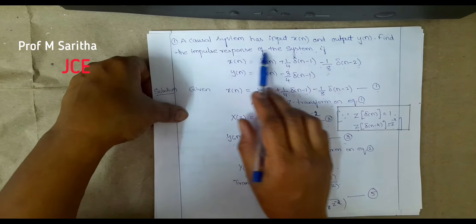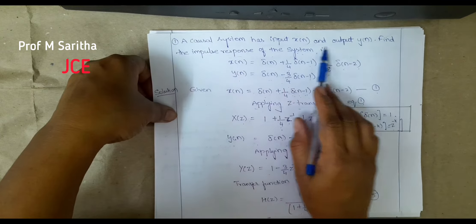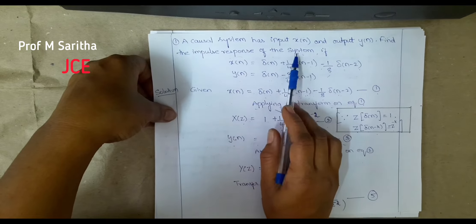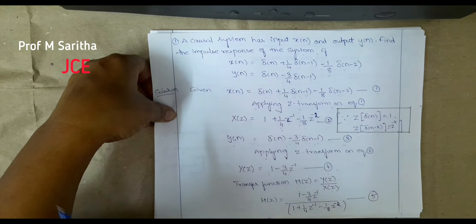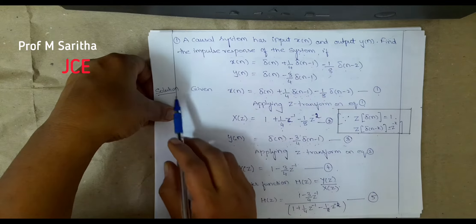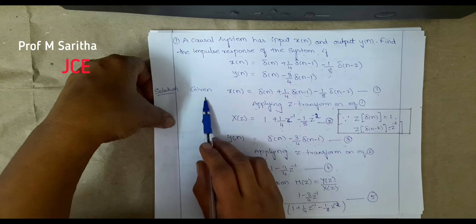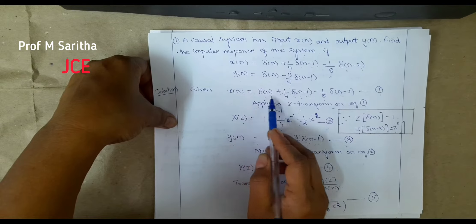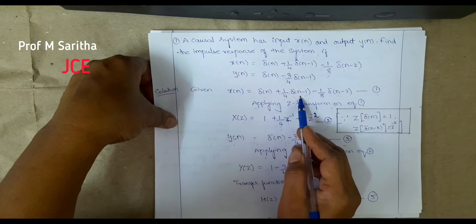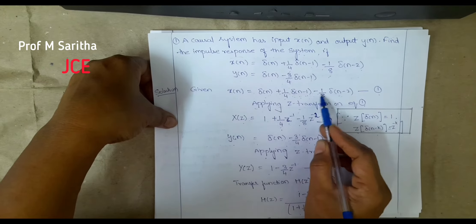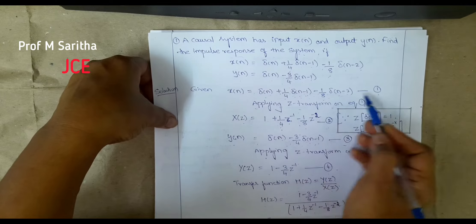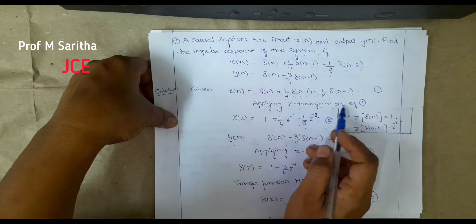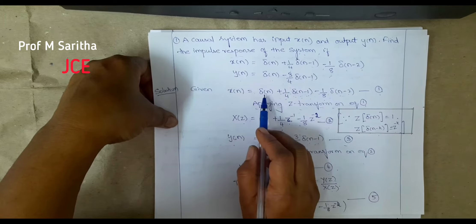Problem 1: A causal system has input x(n) and output y(n). Find the impulse response of the system. Given: x(n) = δ(n) + (1/4)δ(n−1) − (1/8)δ(n−2). Let us take this as equation 1.